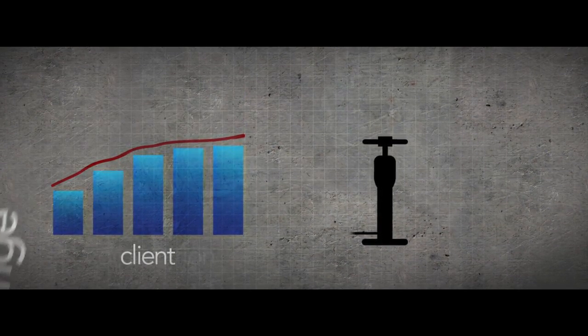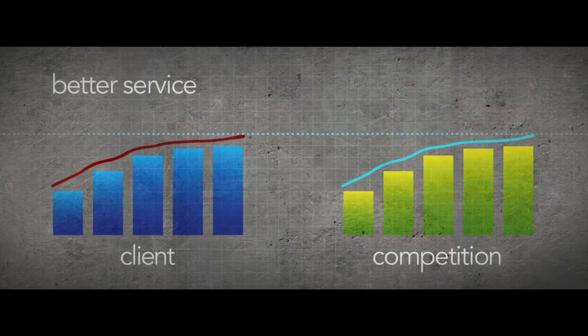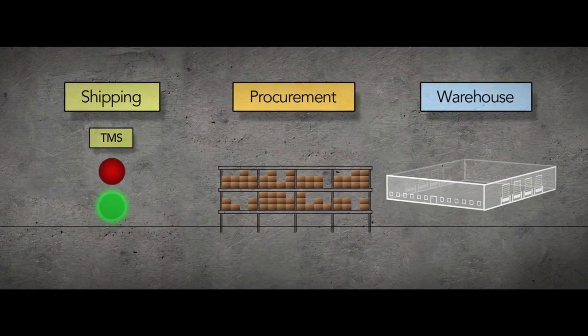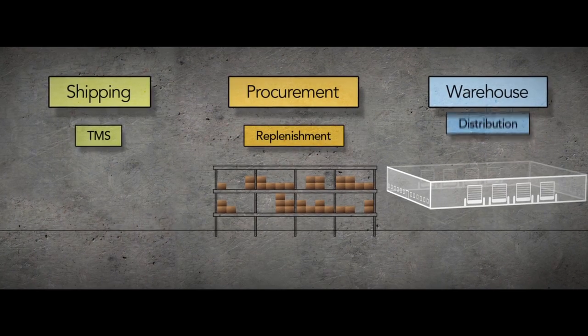...have better service and more products. Shipping runs a TMS and controls the inbound freight. Procurement installed a replenishment system years ago to keep inventory lean, and the warehouses are pretty well automated. I don't know if there's low-hanging fruit—I can't find it. Yeah, I see that a lot in wholesale: siloed thinking. You've got to step back and understand how the changes they make in one part of the business either help or hurt the other parts.